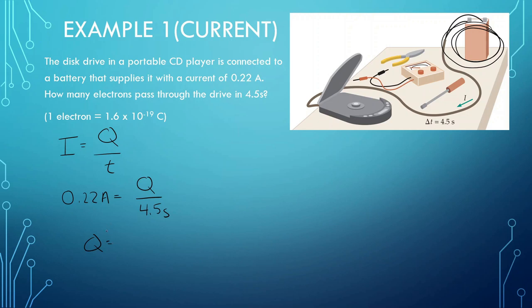So now we put this into our calculators: 0.22 times 4.5, and we can see that we get 0.99 Coulombs. But we want to now know what 0.99 Coulombs is in terms of electrons.